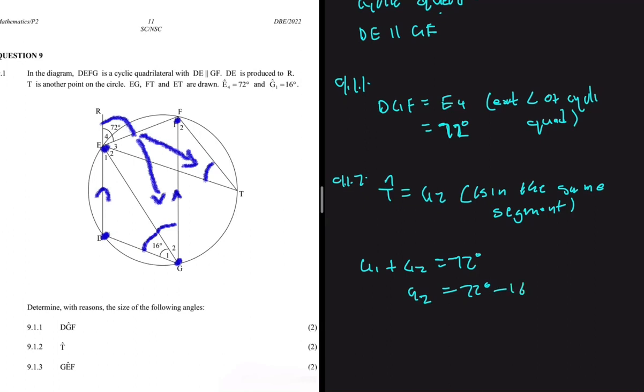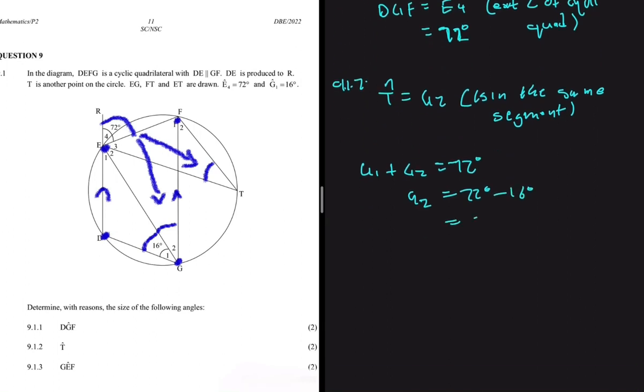So G2 will be equal to 72 degrees minus G1, which is 16 degrees. If you compute that, you'll get 56 degrees. So that is 9.1.2 - the size of angle T.